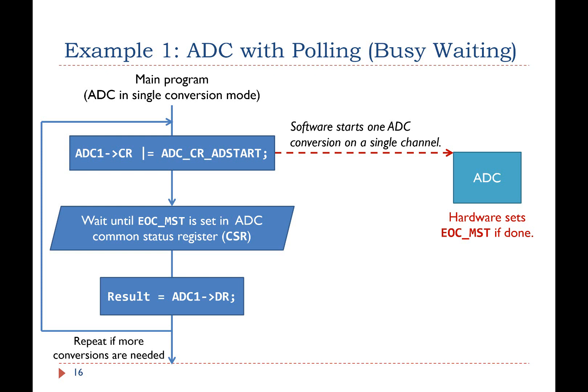In the first example, software is polling or busy waiting to get ADC results. Assume ADC is configured to make conversion once instead of repeatedly. Software first sets the AD start bit in the ADC control register to start the conversion on the specified channel. Then, software waits until the conversion completes. When a conversion finishes, hardware sets the end of conversion flag EOC to 1 to indicate that the result has been placed into the ADC data register. Software uses this while statement to wait until hardware sets the EOC flag. After the while statement, software can read the ADC results. If more conversions are needed, software can repeat this process. This busy waiting method is simple, but very inefficient.